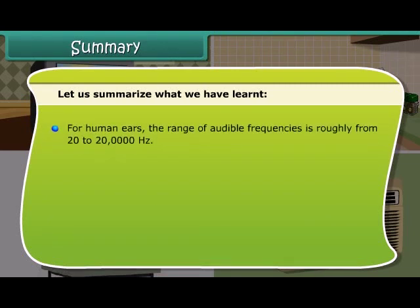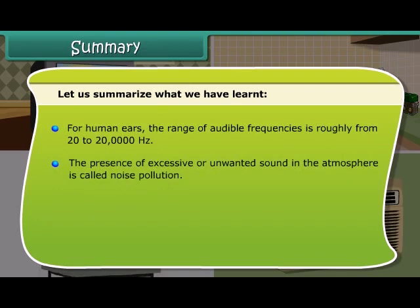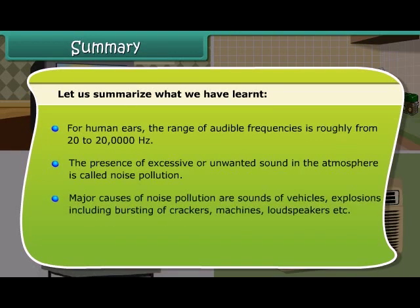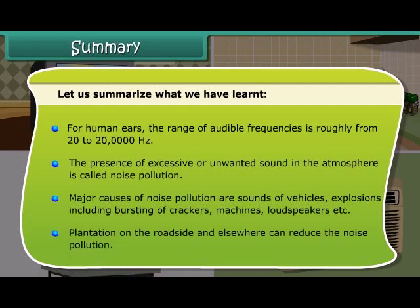For human ears, the range of audible frequencies is roughly from 20 to 20,000 hertz. The presence of excessive or unwanted sound in the atmosphere is called noise pollution. Major causes include sounds of vehicles, explosions including bursting of crackers, machines, loudspeakers, etc. Plantation on the roadside and elsewhere can help reduce noise pollution.